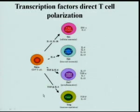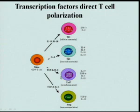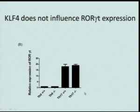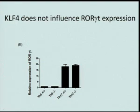We then considered whether KLF4 affected expression of ROR-γt, the canonical transcription factor required for TH17 in mice. When we compared ROR-γt mRNA induction during polarization of naive T cells towards TH17, there was significant upregulation of ROR-γt in both wild-type and knockout cells with essentially no difference in messenger RNA levels. This suggests KLF4 acts either downstream of or independently of ROR-γt.